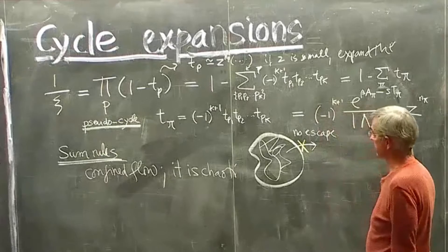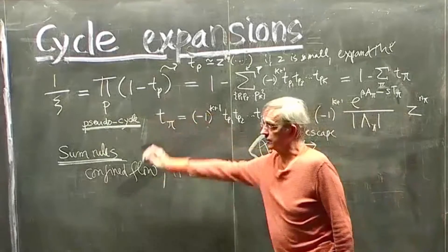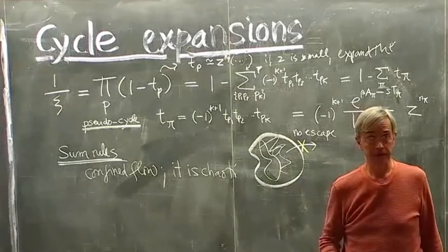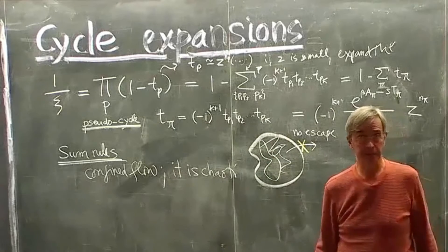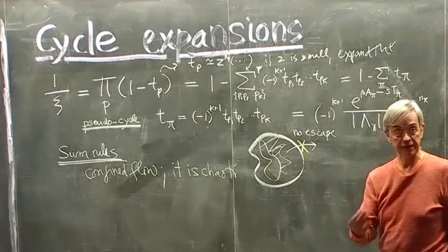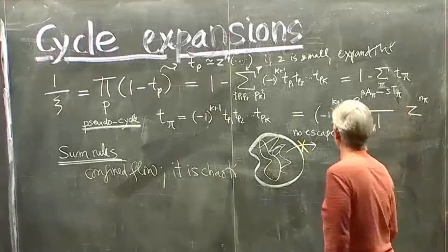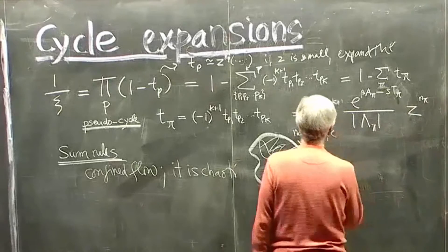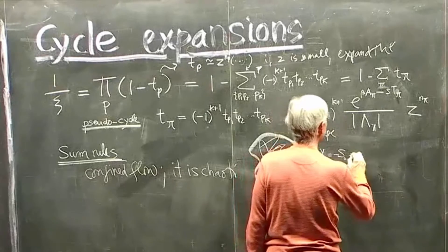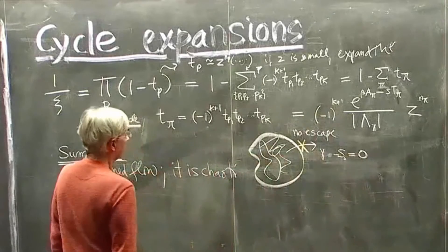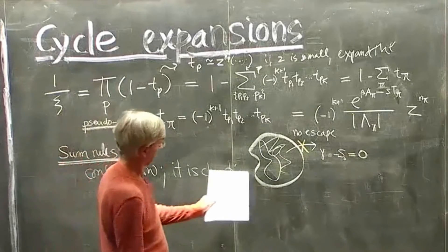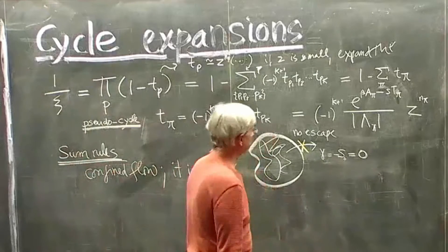And the zeros of zeta functions are supposed to be related to the eigenvalues, and the leading zero has to be the one that's related to the leading eigenvalue, which is the escape rate. So if the escape rate gamma, which is minus the leading eigenvalue, if this is zero, then the zeta function should be zero at the escape rate.